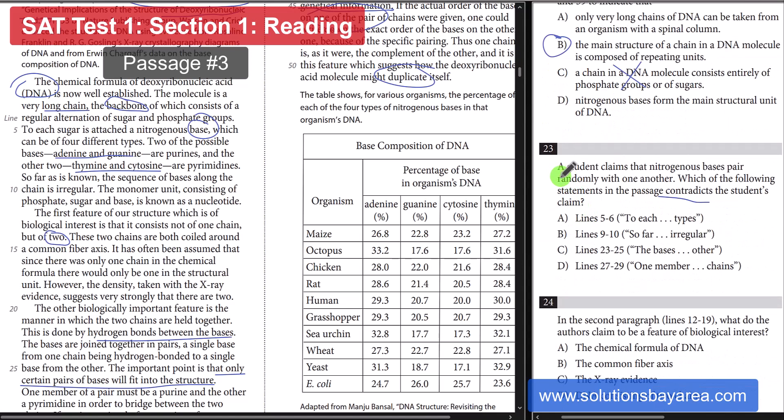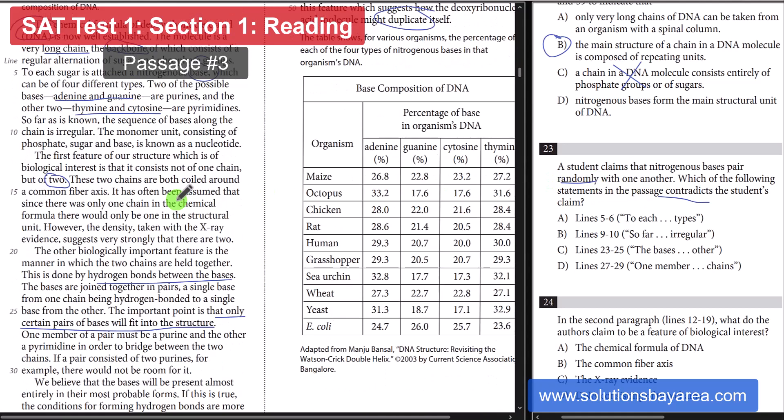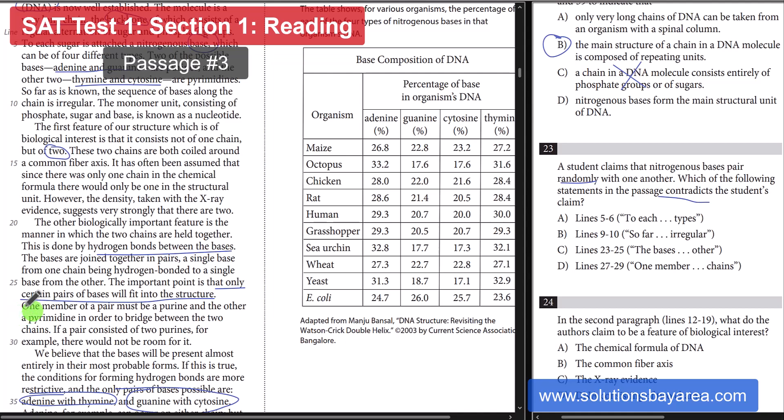Student claims that the bases pair up randomly with each other. Well, as we well know, they do not pair up randomly. Looking back at the passage, going at 27 to 29, it talks about how one member of a pair must be a purine, and the other is a pyrimidine in order to bridge the gap. So, that is going to be D.